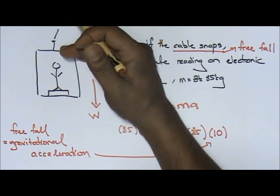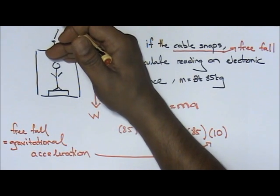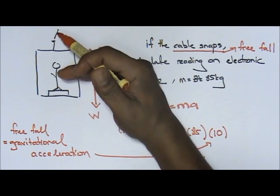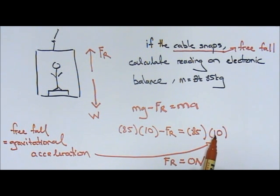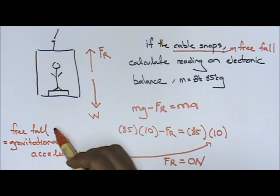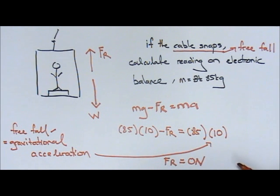That means if the lift is falling down, you'll be on top of the lift shouting 'rescue me, help me.' Remember, if the lift is going down, the concept never changes: mg minus FR equals ma. The reason your a is 10 is because it's free fall, and free fall equals gravitational acceleration.